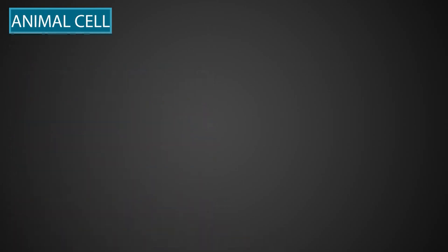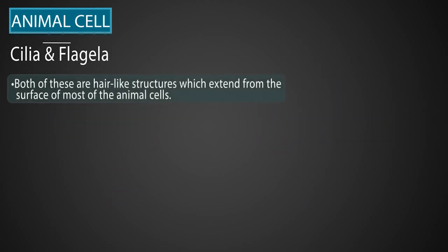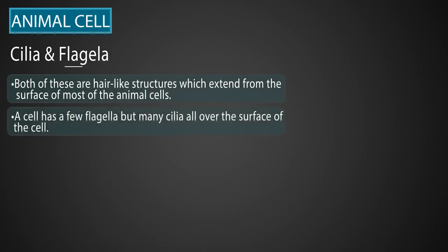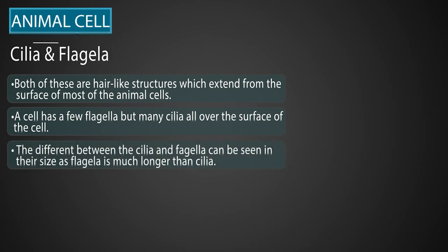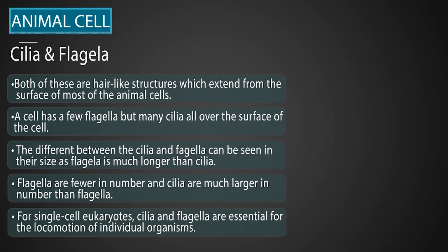Now let's learn about two organelles which are not found in plant cells — they are only found in animal cells: cilia and flagella. These are hair-like structures which extend from the surface of most animal cells. A cell has a few flagella but many cilia all over the surface of the cell. Flagella are much longer than cilia, and fewer in number, while cilia are much larger in number. For a single-cell eukaryote, cilia and flagella are essential for the locomotion of individual organisms.